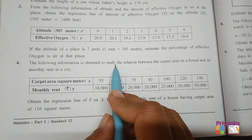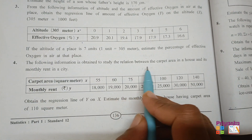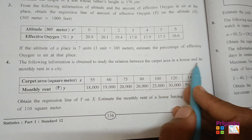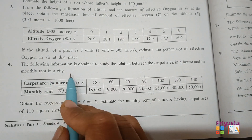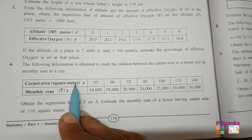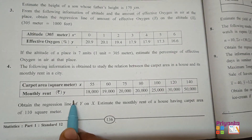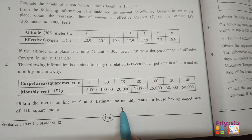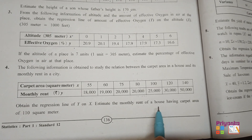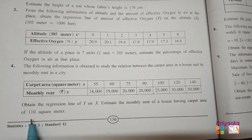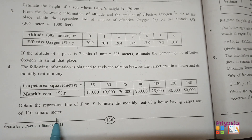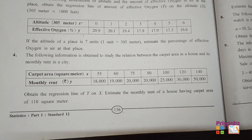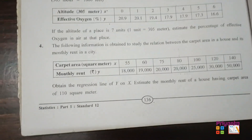The following information is obtained to study the relation between the carpet area in a house and its monthly rent in a city. Here x̄ and ȳ and the obtained regression line y on x are given. Estimate the monthly rent of a house having carpet area 110 square meters. So let's start with the calculation.